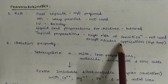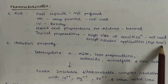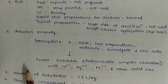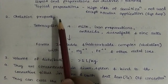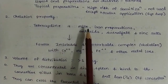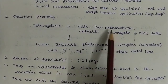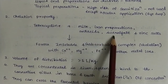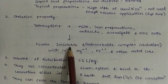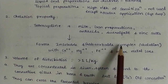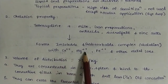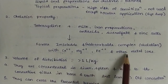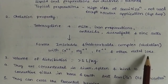But in ocular application as an eye drop, it can be used. Next, chelation property: tetracycline along with milk, iron preparations, antacids, sucralfate, and zinc salts form insoluble and unabsorbable complexes — that is, chelation with calcium, magnesium, iron, and other metal ions — and hence decreases the absorption of tetracycline.